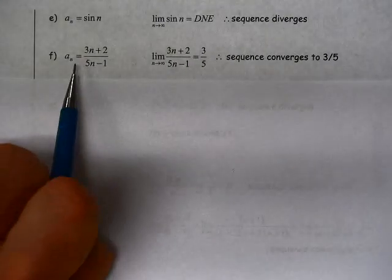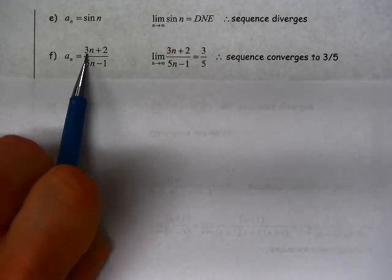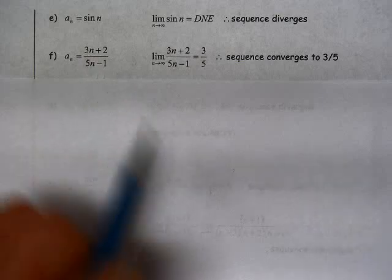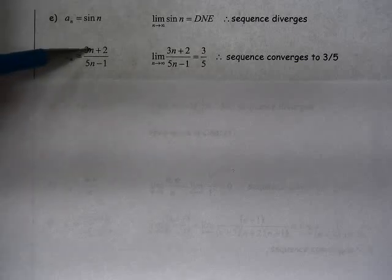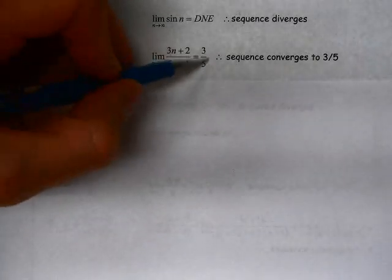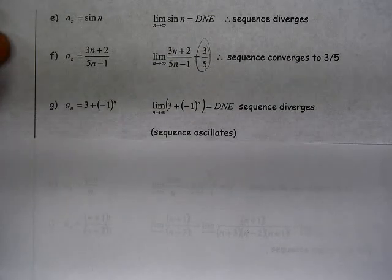So here we have a sub n defined as 3 n plus 2 over 5 n minus 1. We know that this limit, if I were to divide numerator and denominator by the highest power of n, or I can use L'Hopital's rule, because I have here by direct substitution, I'll have infinity over infinity, so if I take the derivative of both of those, I get 3 fifths. So this sequence converges to 3 fifths.